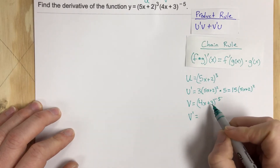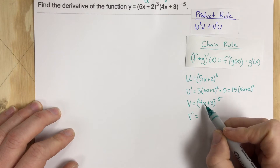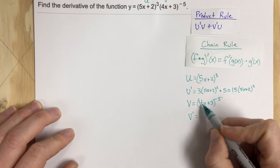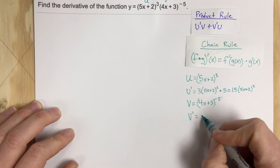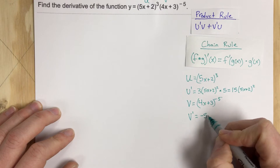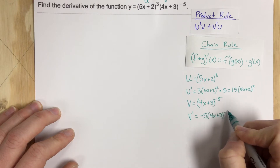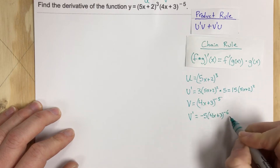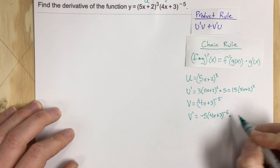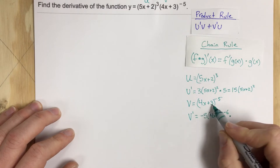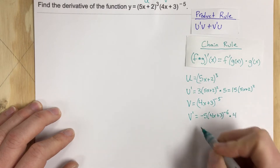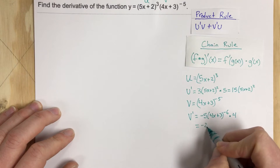Now finding v prime: the derivative of the outside gives negative 5 to the front, so we have 4x plus 3 to the negative sixth power, times the derivative of the inside which is 4. That ends up being negative 20 times 4x plus 3 to the negative sixth power.